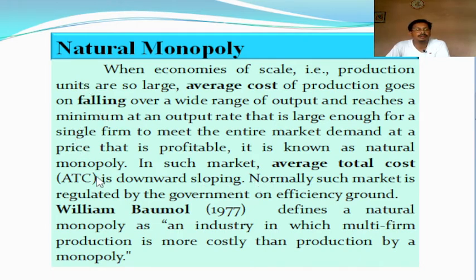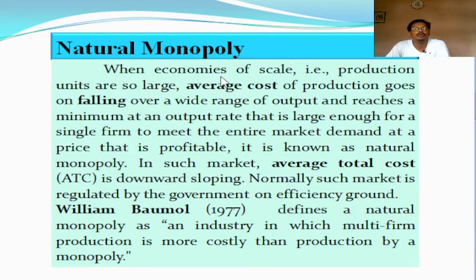That monopoly is called natural monopoly. In that case, the average total cost under natural monopoly always remains downward sloping — it never rises. Normally, we know that the average cost curve is U-shaped. But in case of natural monopoly, it is always downward sloping, and such a situation arises when natural monopoly is due to the control of the government sector, on efficiency grounds, such that the average cost curve always remains downward sloping and never rising.